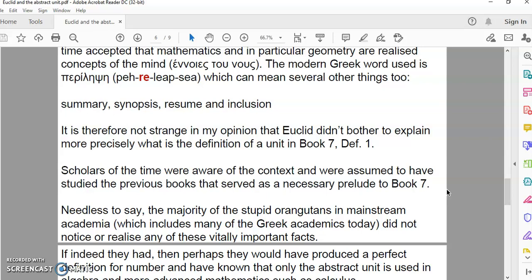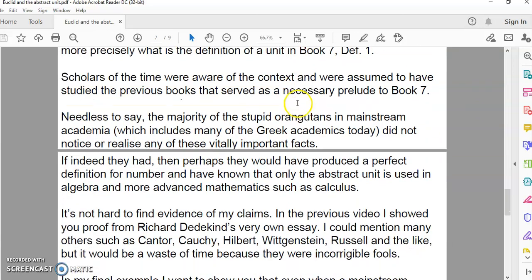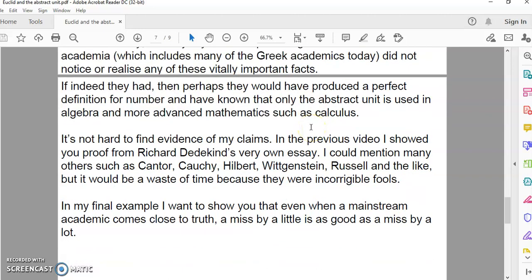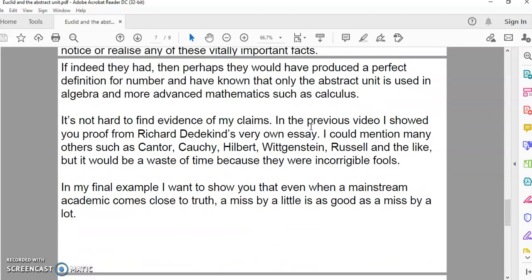Scholars of the time were aware of the context and were assumed to have studied the previous books that served as a necessary prelude to Book 7. Needless to say, the majority of the stupid orangutans in mainstream academia, which includes many of the modern Greek academics today, did not notice any of these vitally important facts. If they had, they would have known what is an abstract unit and what is a perfect definition of number.